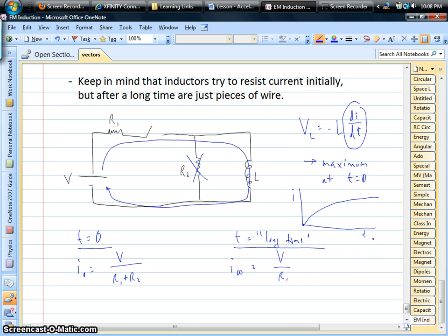Now, if there happened to be a third resistor on that branch, okay, then, after a long time, it's as if the inductor is not even there. It's just a piece of wire. And so it'd be kind of like R2 and R3 were in parallel with each other.